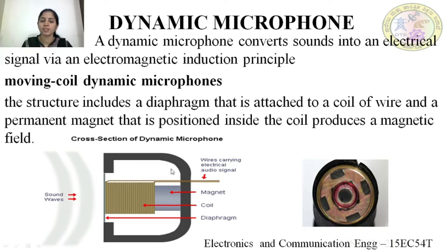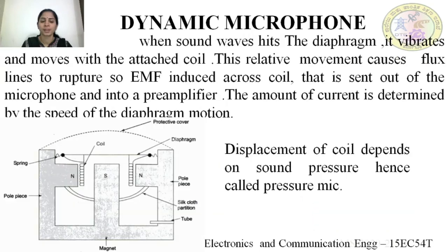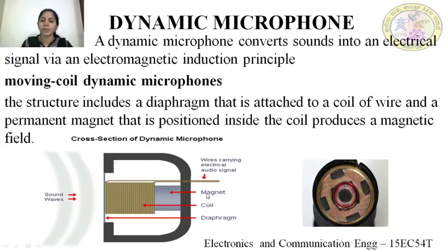As we learned in previous semesters, whenever a permanent magnet is moved inside the coil of wire, there will be a generation of current in the coil. As per Faraday's second law, rate of change of flux lines induces an EMF in the coil. The permanent magnet has its own magnetic field consisting of magnetic flux lines, and a coil of wire has an electric field consisting of electric flux lines. Whenever a magnet is moved inside the coil, there will be changes in the magnetic and electric flux lines. Due to this, an EMF is induced in the coil, thereby a current is generated. So this is the original audio signal output.